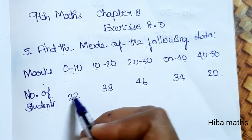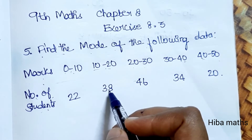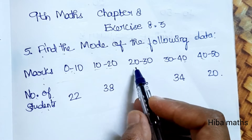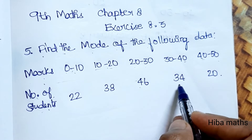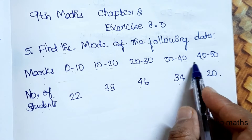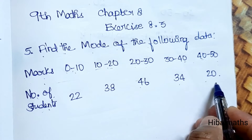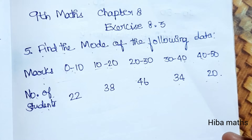The number of students for each interval: 0 to 10 is 22, 10 to 20 is 38, 20 to 30 is 46, 30 to 40 is 34, and 40 to 50 is 20.